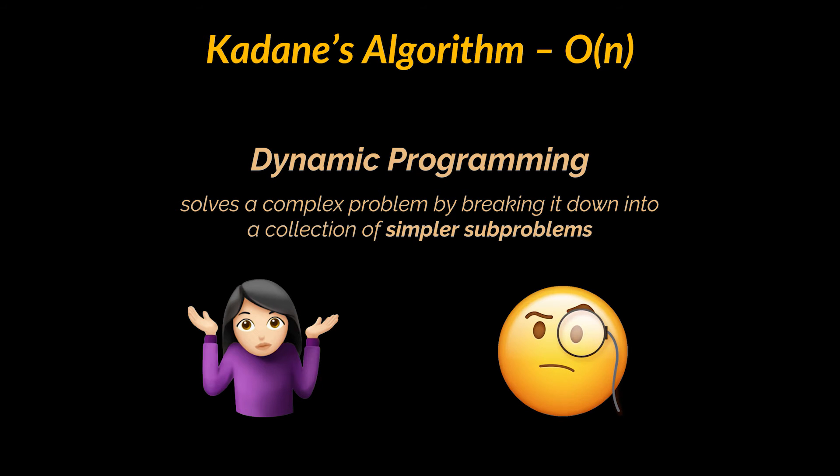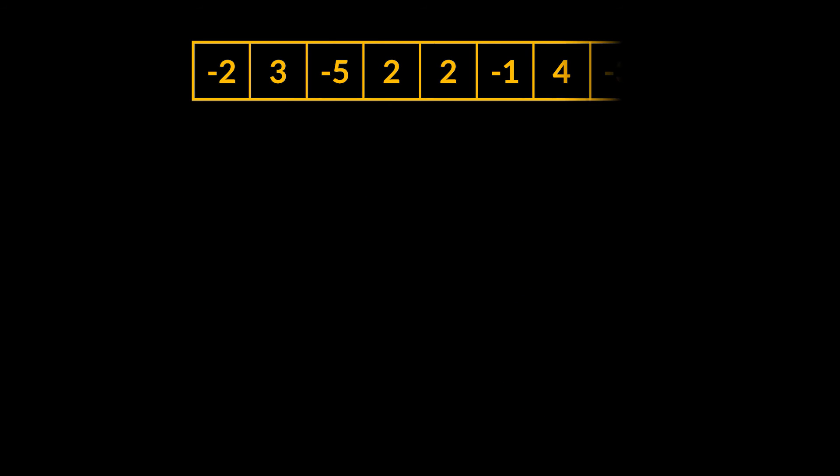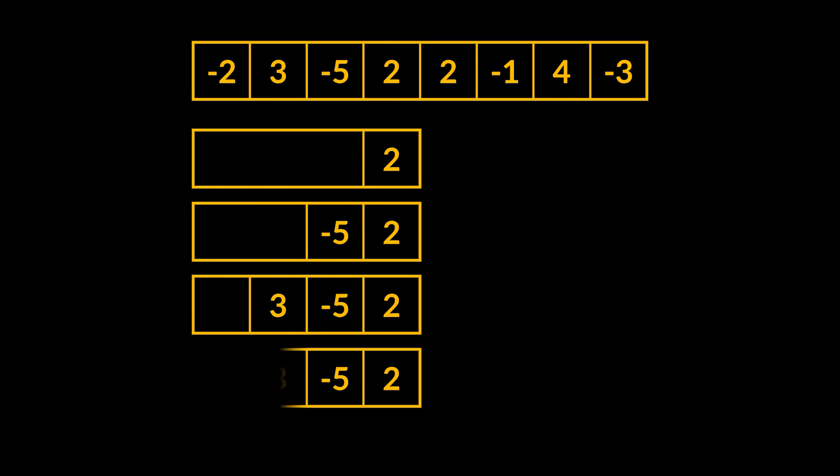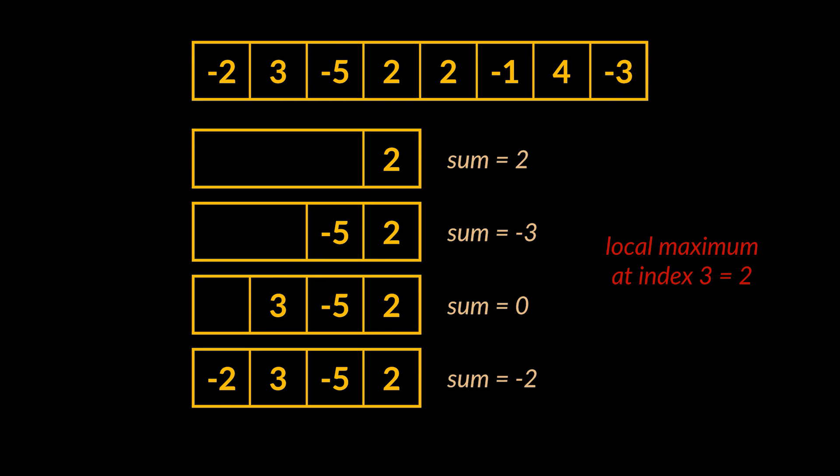Now how can we use dynamic programming to solve the problem at hand? What is the sub-problem we are trying to tackle here? Well, let's bring back the array we had as an example and let's define the notion of local maximum at a certain index. What do we mean by this? Take index 3. All the possible subarrays that end with this index are shown in front of you. The sum of the elements stored inside each subarray is displayed to the right, and the maximum number between these sums is the local maximum at index 3.